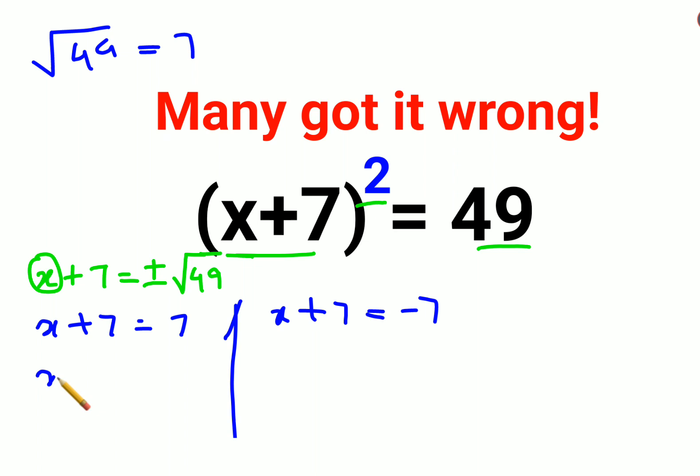So now in order to find the value of x you will subtract both sides by 7. So here answer comes out to be 0 and here also we will subtract both sides by 7. So here you are getting x equals to minus 7 minus 7 that is equal to minus 14.